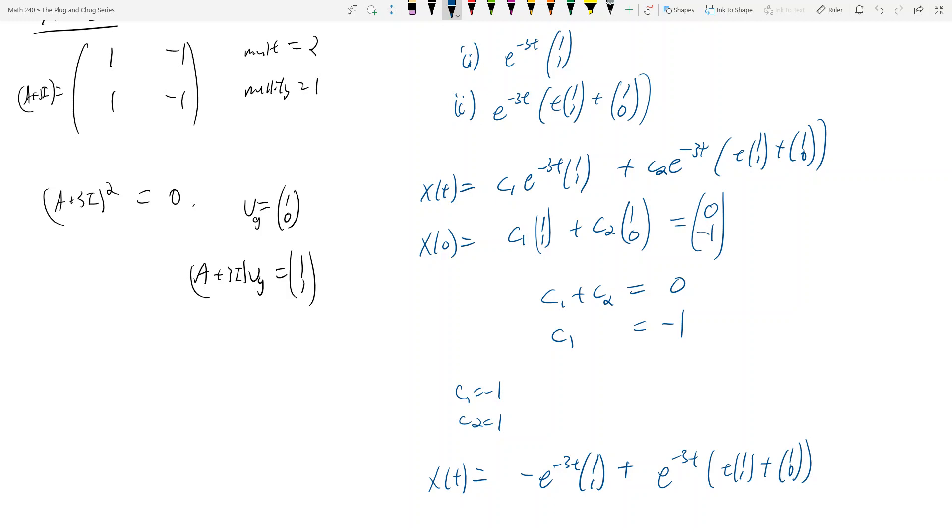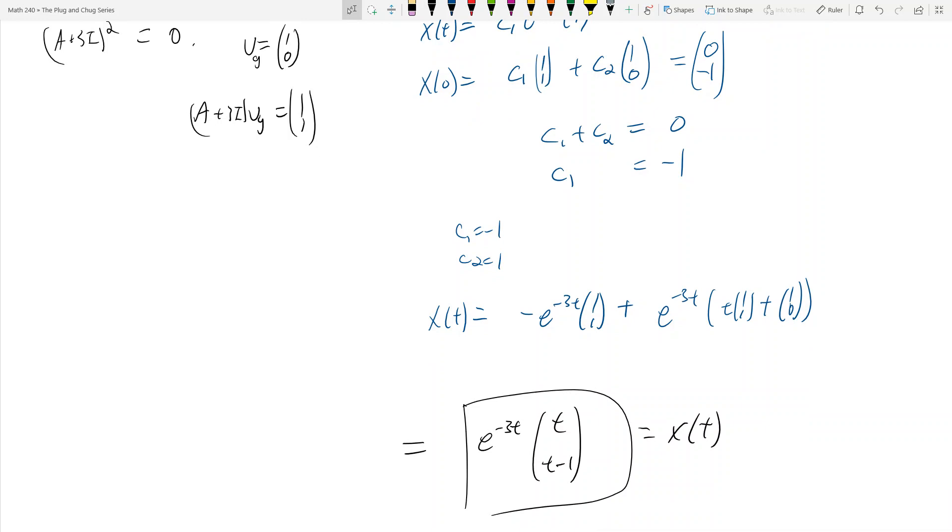And where do we need to end up? We need to end up down here. And we see, if I just multiply everything through, this then is equal to -e^(-3t)*(1,1) plus e^(-3t)*t*t plus e^(-3t)*(1,0).